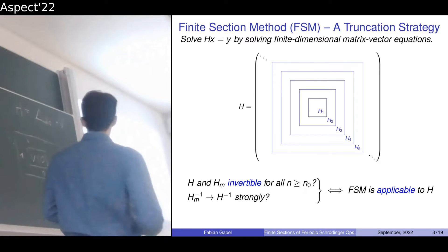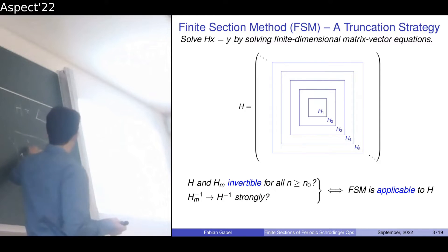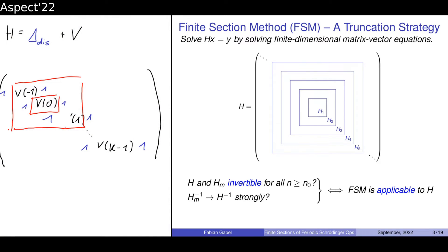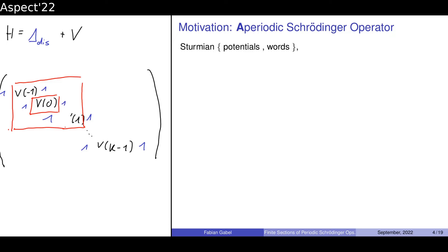Periodic means in our case that our potential is k-periodic for k being a natural number. This means we have the sequence v₀ to v_{k-1} periodically repeated along the diagonal. How can we motivate the study of periodic Schrödinger operators? It's already a very well studied topic, and what got us into this study was actually the question about applicability for aperiodic Schrödinger operators.